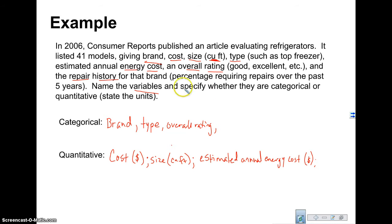And the repair history, that's going to also be categorical. Well hold on. It says it was given in the percentage requiring repairs over the past five years. So that's giving us a percent for each, for that brand of refrigerator. So that's actually going to be quantitative. So we're going to write down repair history, and that was given in a percent. So these are the categorical variables and these are the quantitative variables.